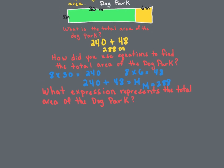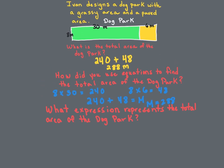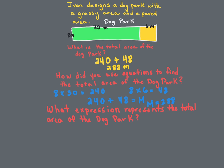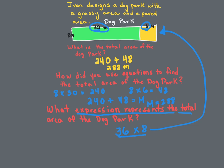Down at the bottom it says: what expression represents the total area of the park? We're reversing back to the original problem. We look up and see 30 and 6 — we have to join those back together to make 36 and multiply it by the 8. This was the original problem used to create this area model. So you put back the 30 and the 6 to get 36 times 8 — that is the expression representing the total area of the dog park.